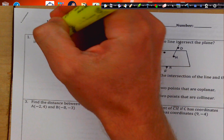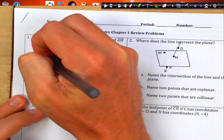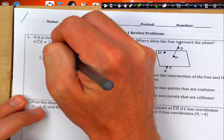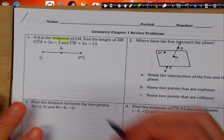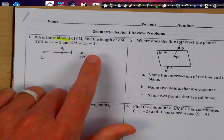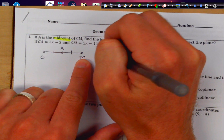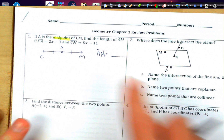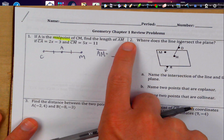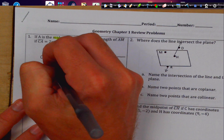The keyword here is 'midpoint.' Next, draw a picture. A is the midpoint of CM, so we have a segment CM and A is the midpoint. If A is the midpoint, it breaks the segment into two congruent pieces — those get two little congruent marks. We want to find AM, so I'll write that off to the side. We're looking at a line segment.